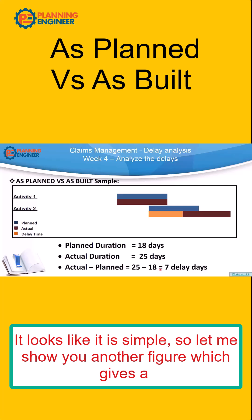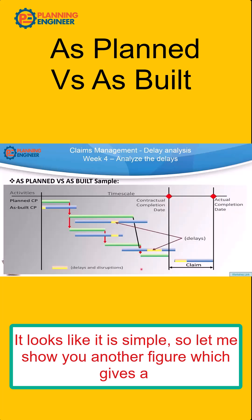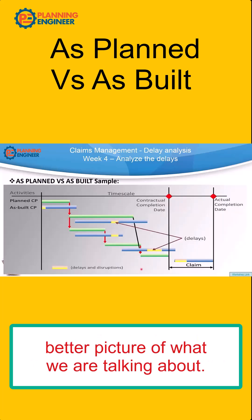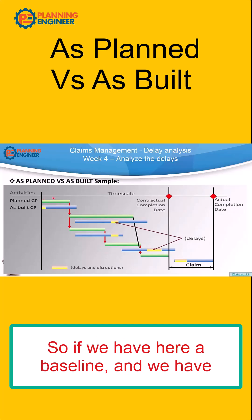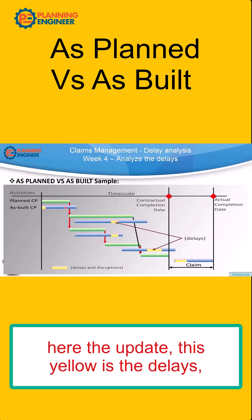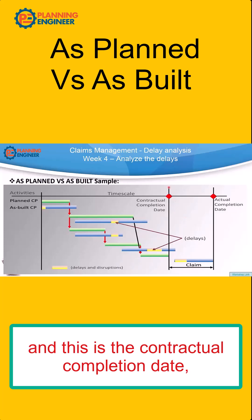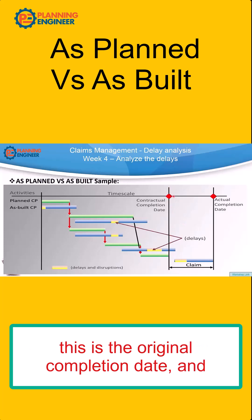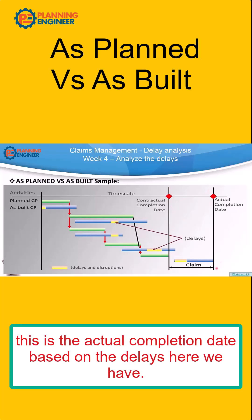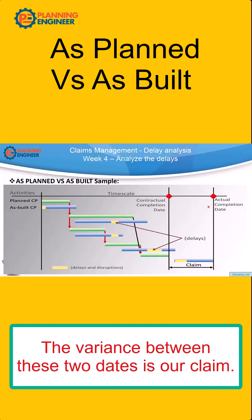Let me show you another figure which gives a better picture of what we are talking about. If we have here a baseline and the update, the yellow represents the delays. This is the contractual completion date, this is the original completion date, and this is the actual completion date based on the delays. The variance between these two dates is our claim.